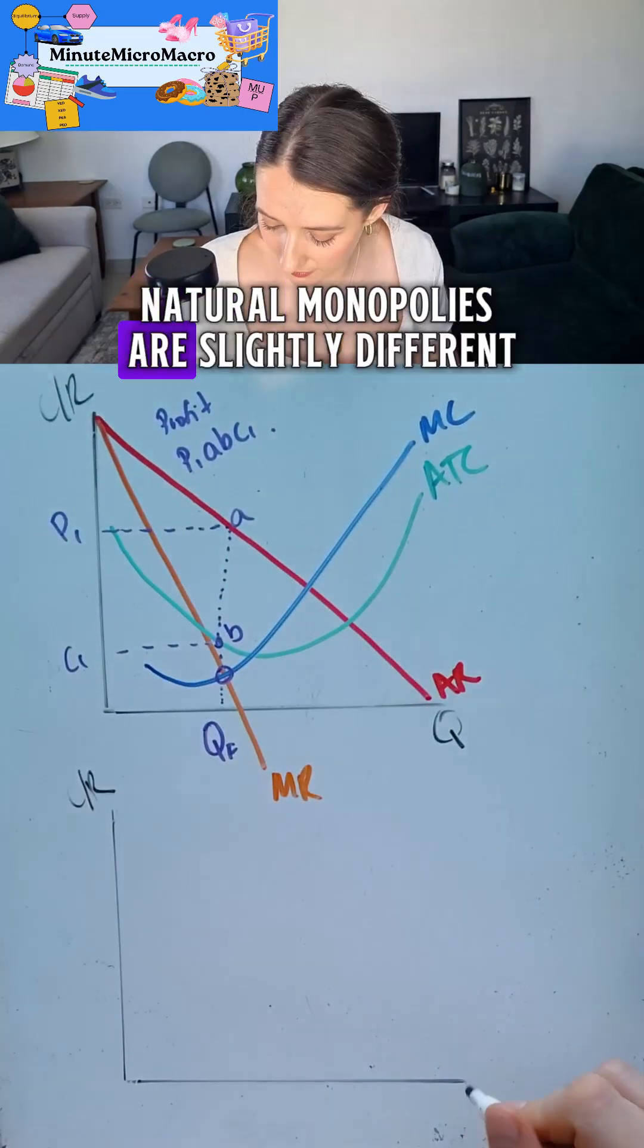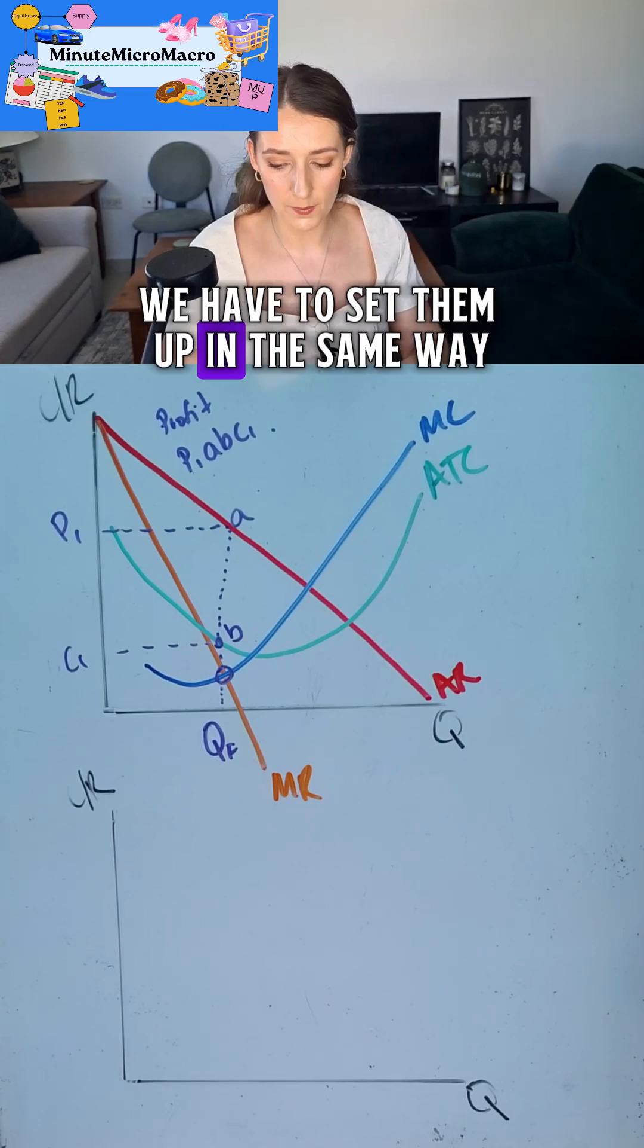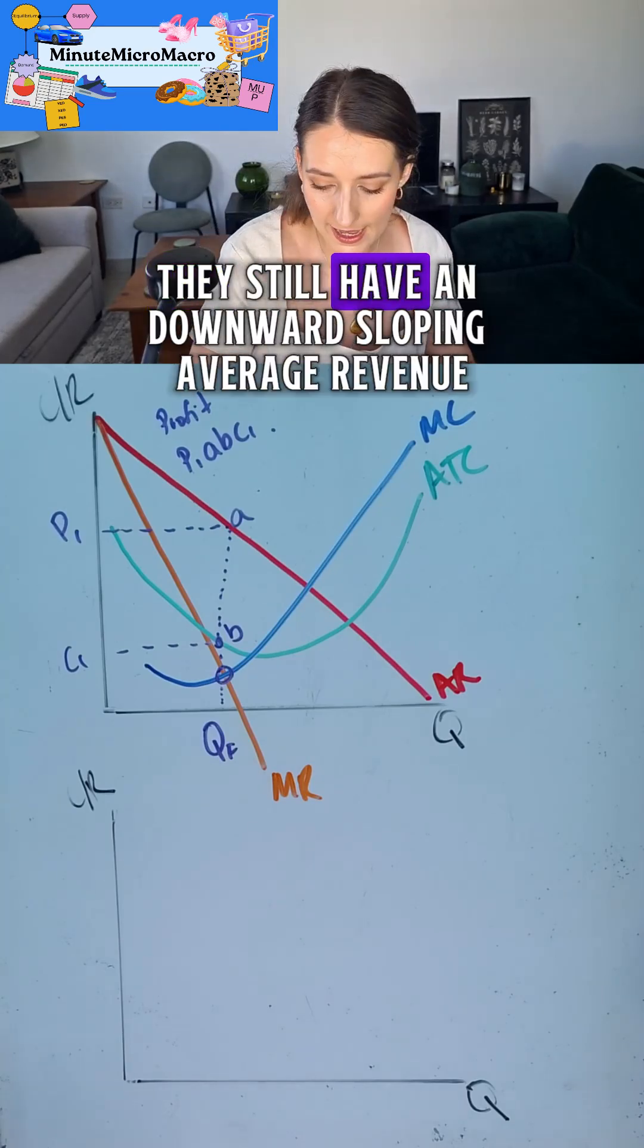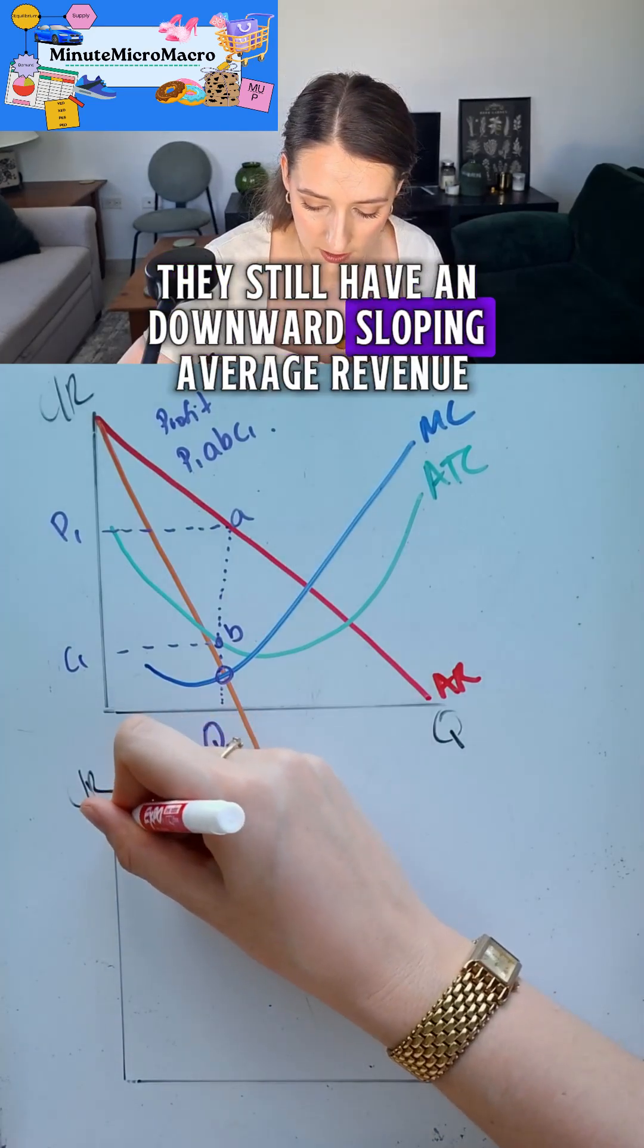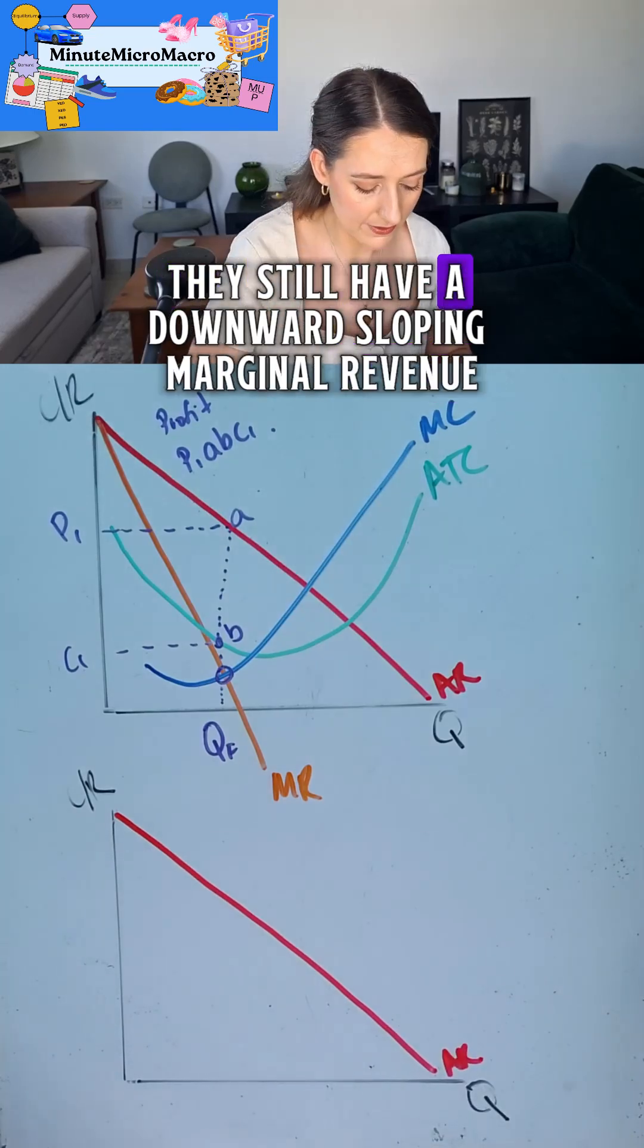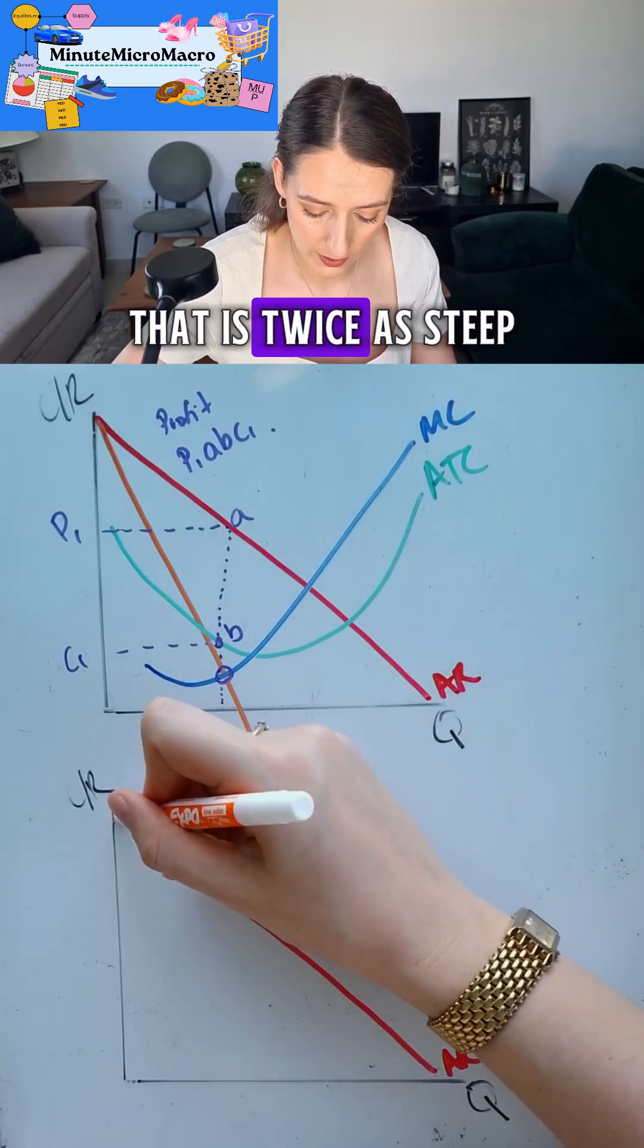However, natural monopolies are slightly different. We have to set them up in the same way. They still have a downward sloping average revenue. They still have a downward sloping marginal revenue that is twice as steep.